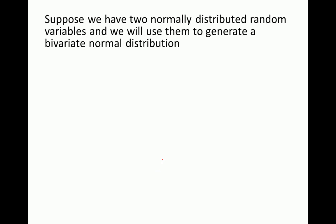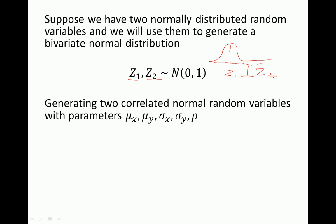Suppose we have two normally distributed random variables — this is the normal distribution — and we'll use them to generate a bivariate normal distribution. We start with two independent normal variables z1 and z2, and we're interested in generating two correlated normal random variables with parameters: mu x, mu y, sigma x, sigma y, and rho.